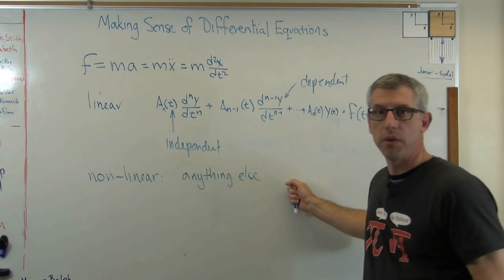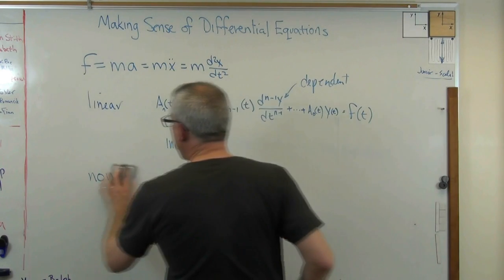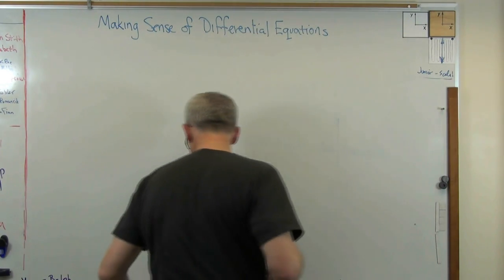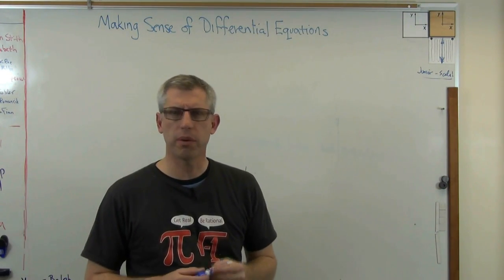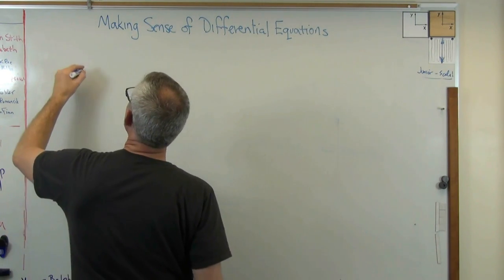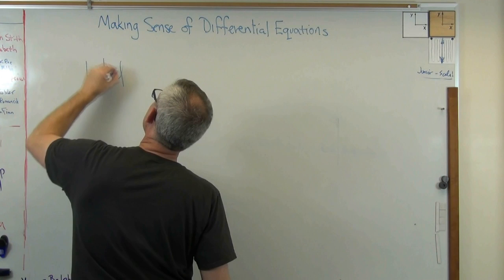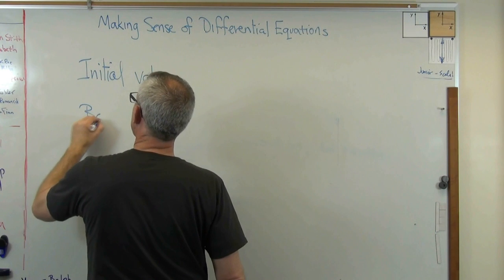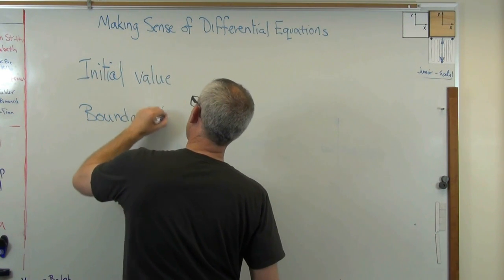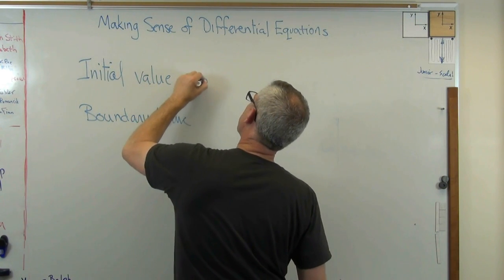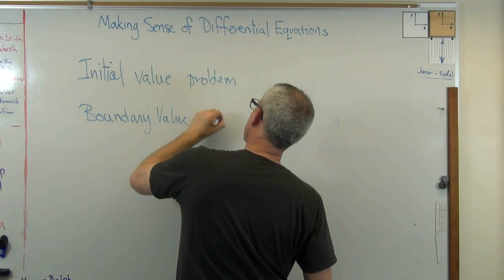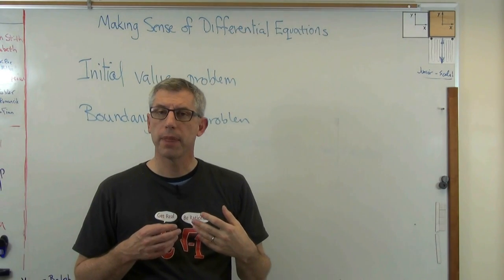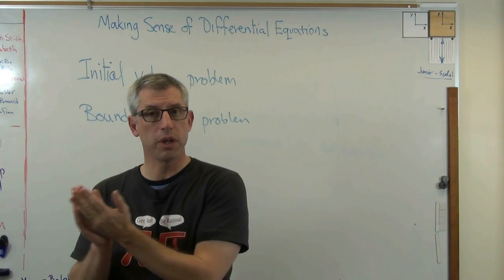The last distinction we're going to make is boundary value versus initial value problem. To me, this is the one set of terminology that made more sense than the others. An initial value problem is one like the one I originally wrote down, where we have the slope of the function equals the function, and I gave you a starting point.